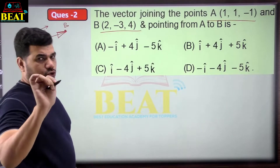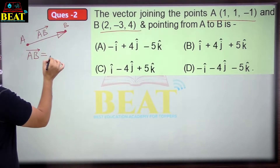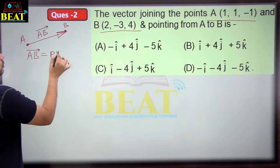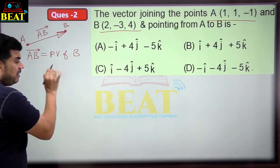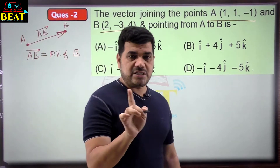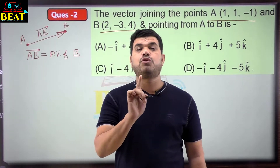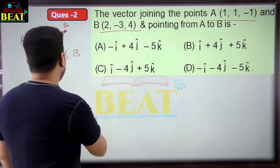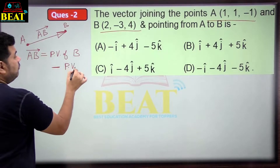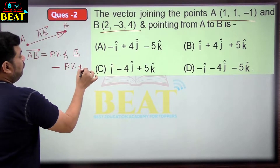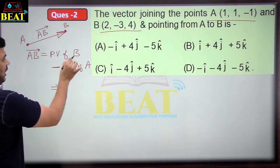Students who don't know this formula, write it in your copy. Vector AB equals PV of B minus PV of A. The position vector is just the coordinates with I cap, J cap, K cap attached. So position vector of B, written as R_B, and position vector of A, written as R_A — take the coordinates and attach I cap, J cap, K cap.